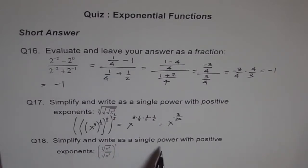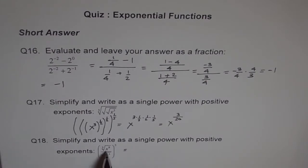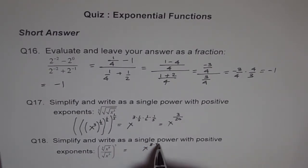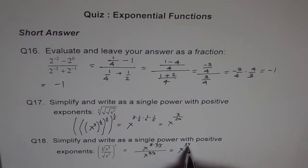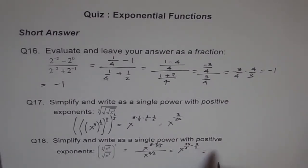The next question also asks to simplify and write as a single power with positive exponents. This can be written as x to the power of 8 times 3 over 5, and x to the power of 3 over 2. Since this is division, we subtract the exponents: 8 times 3 is 24, so we have 24 over 5 minus 3 over 2. We take the common denominator as 10.